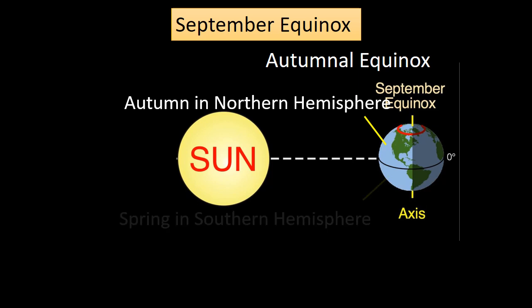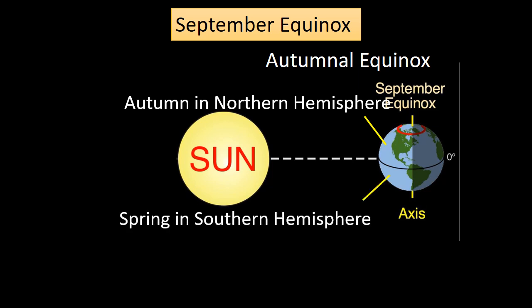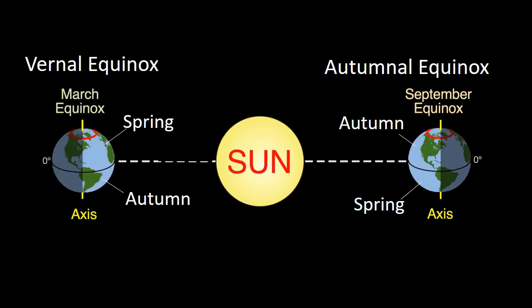The September equinox marks the beginning of autumn in the Northern Hemisphere and spring in the Southern Hemisphere. In both cases, during the equinox, the sun is directly above the Earth's equator, causing the sun's rays to shine equally on the Northern and Southern Hemispheres, resulting in roughly equal day and night all over the world.